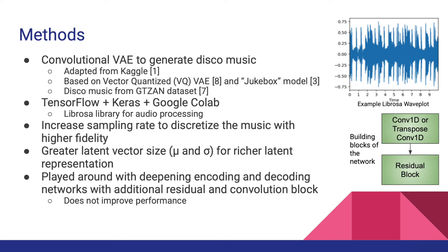The building blocks of our network were various conv1D and transposed conv1D layers, depending on whether it was an encoding or decoding part of the network, as well as residual blocks. The residual blocks consisted of ReLU activation as well as leaky ReLU activations. Leaky ReLU is of particular interest because it has been shown to have better gradient flow. Additionally, in the residual block, we had conv1Ds as well as the typical skip connection known to be in residual networks. The residual block allows for better information flow through various levels of the network.